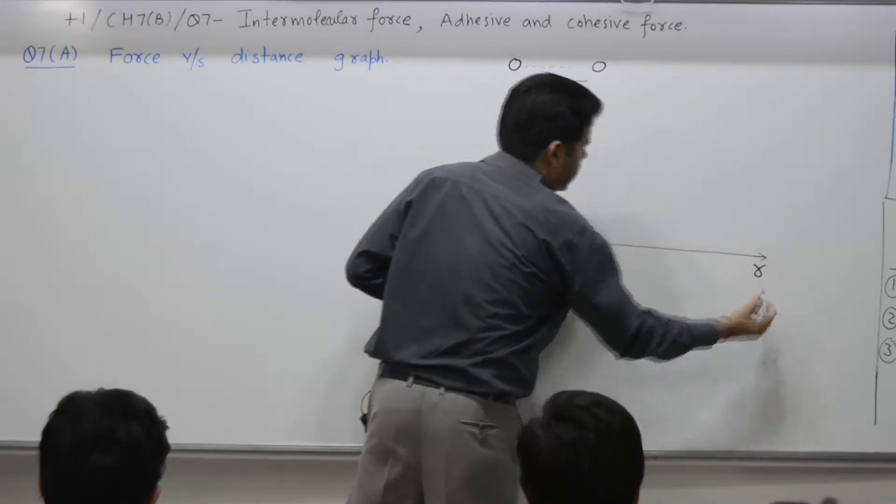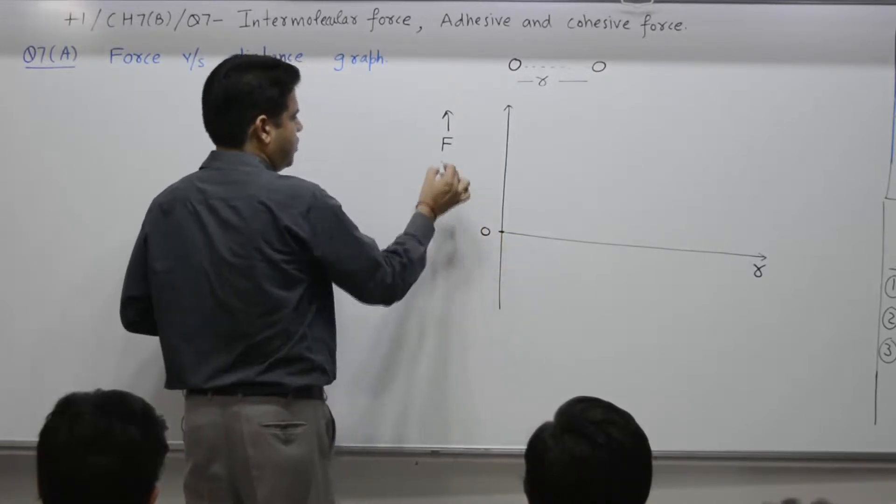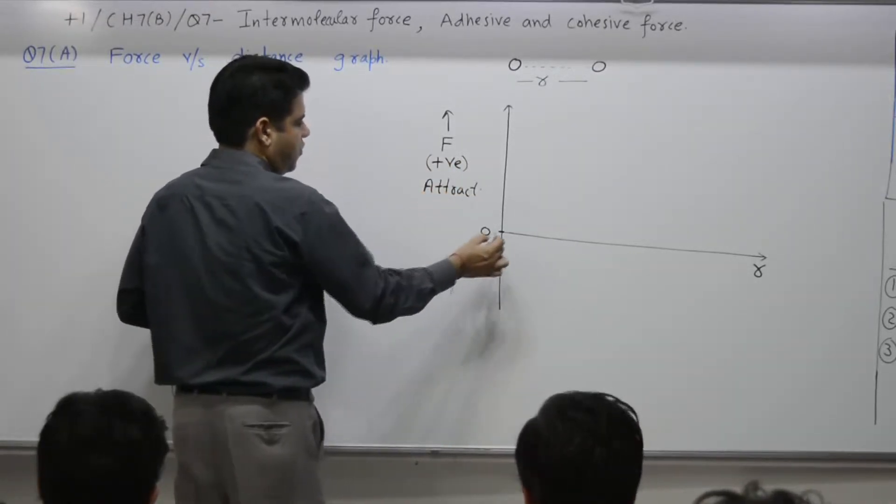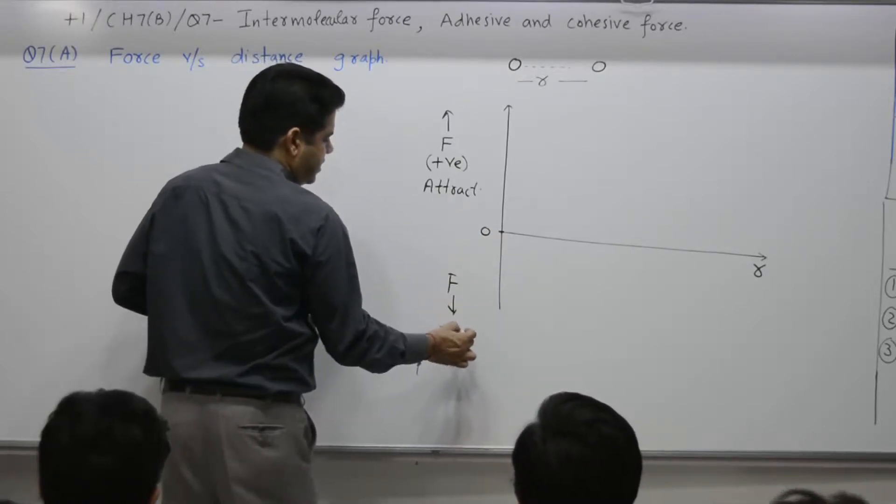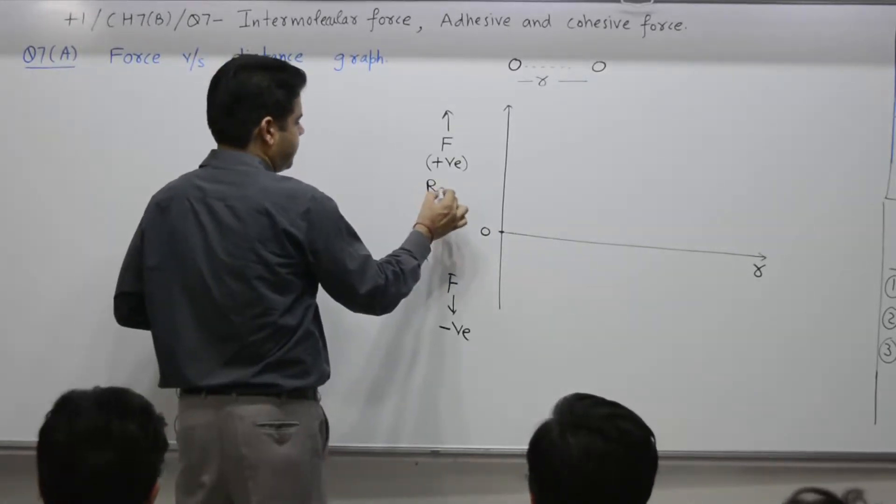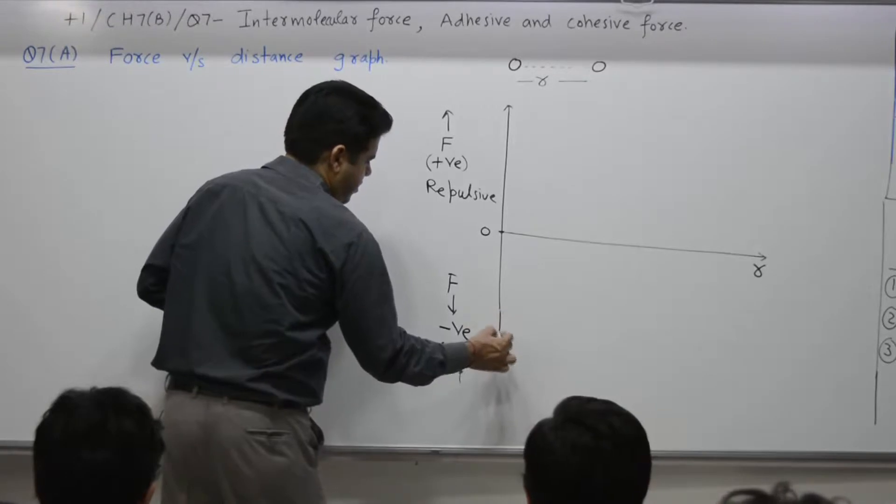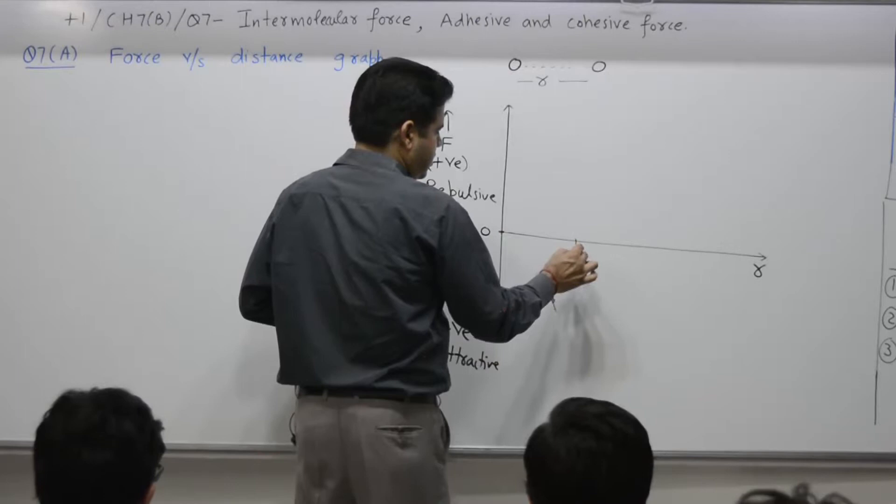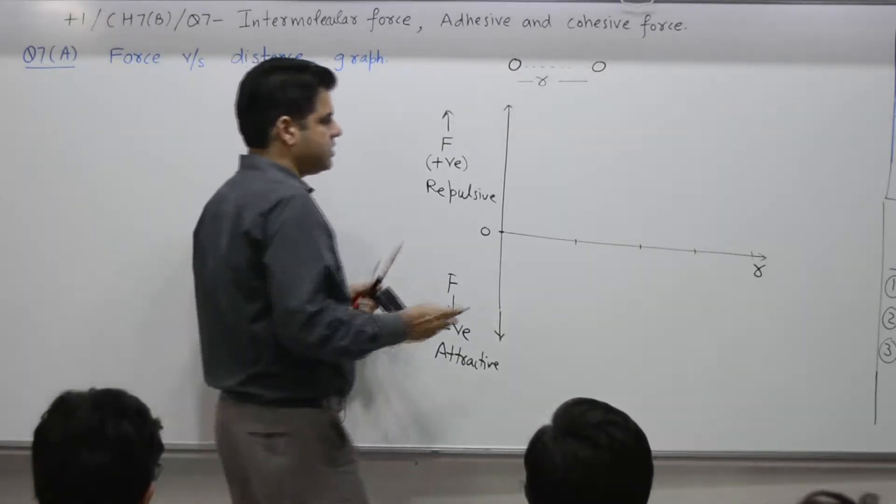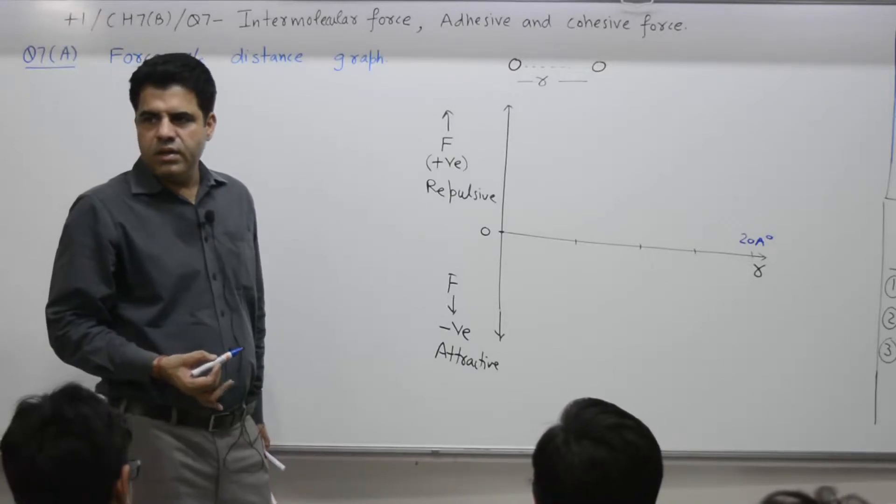Distance along x-axis r, force along y-axis. When you say force, this is zero. Force above this is positive, meaning repulsive, and downward negative means attractive. Distance is marked 5, 10, 15, 20 angstroms. If the distance is of the order of 20 angstroms or so, the force between the two is very, very small, almost zero but not zero.